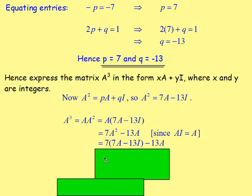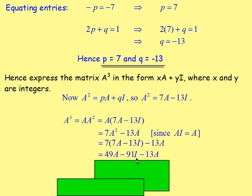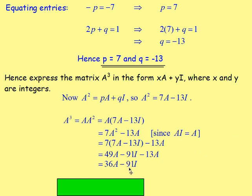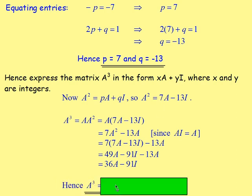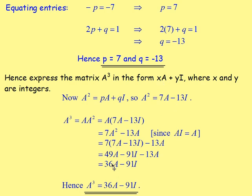From there, we know A² is 7A - 13I, so we replace that: 7 times (7A - 13I) minus 13A. Multiplying out: 7×7A = 49A, 7×13I = 91I, and we subtract 91I and subtract 13A. So 49A - 13A = 36A, and we're taking away 91I. That means A³ equals 36A - 91I, giving X = 36 and Y = -91.